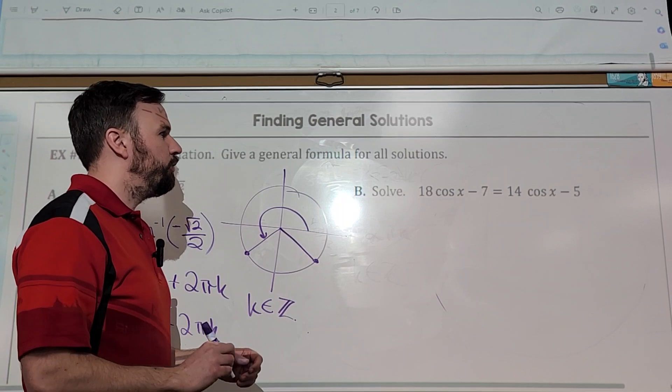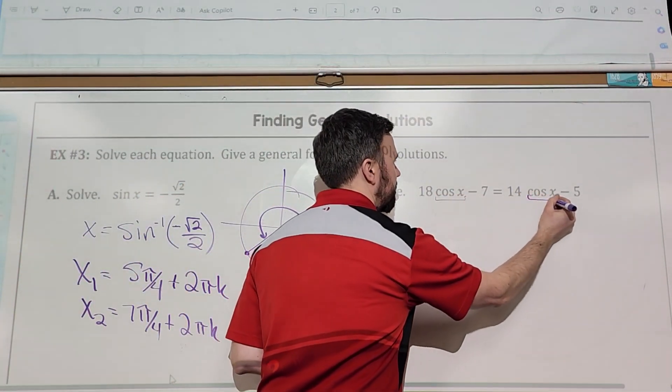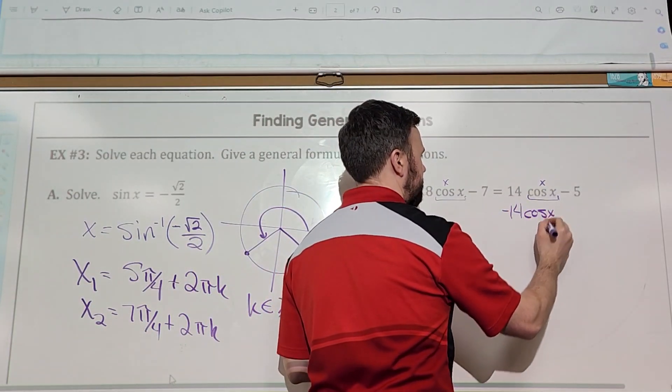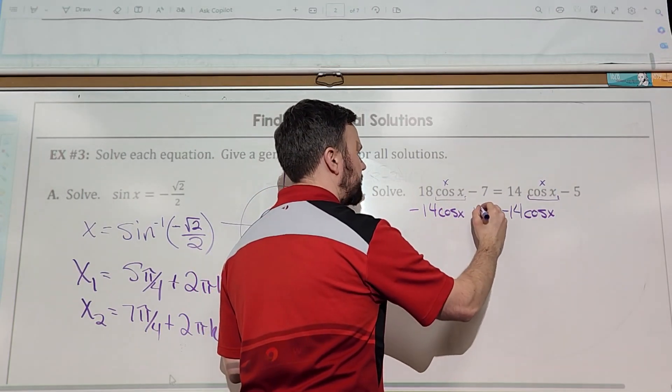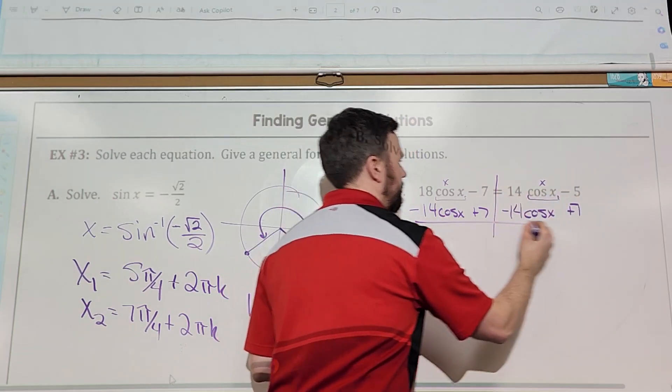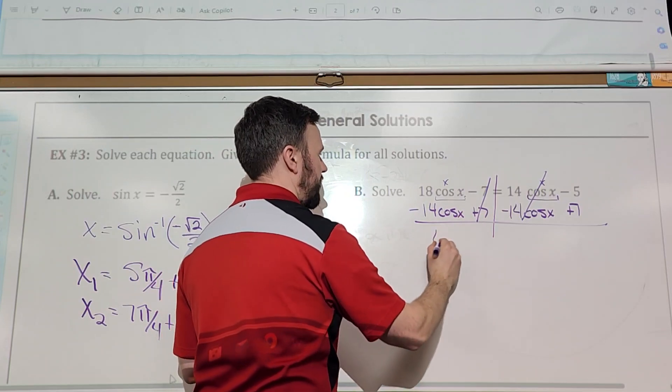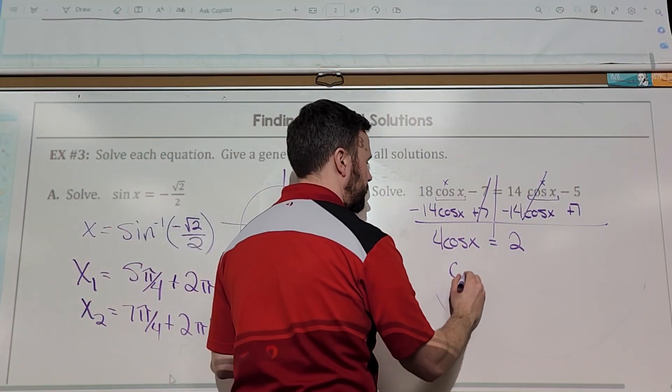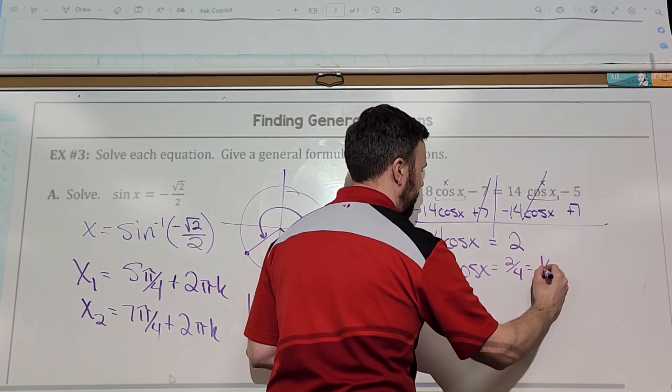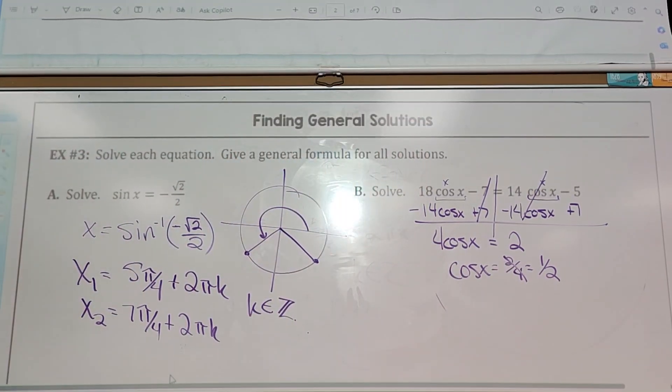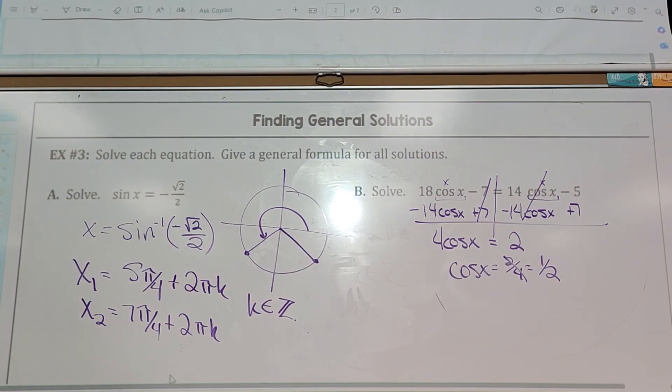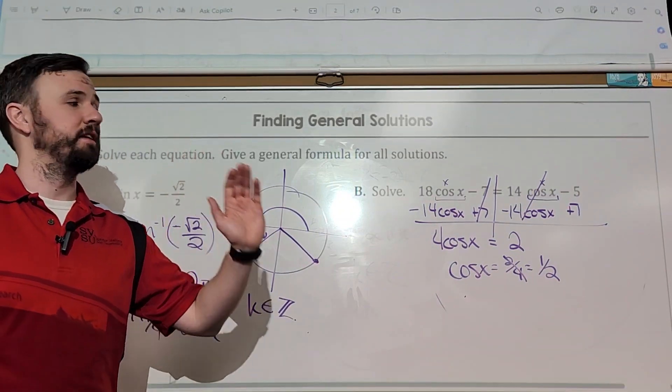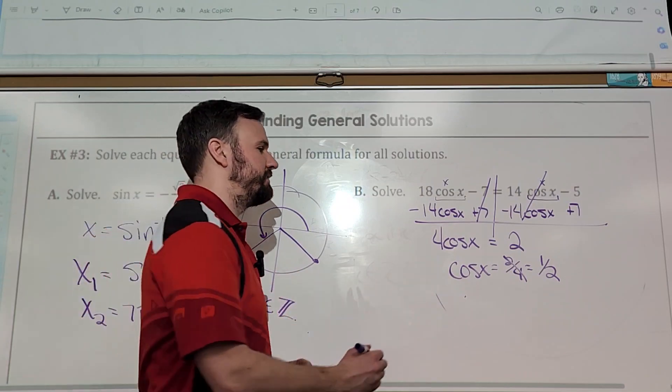Let's solve B. What am I going to treat this cosine like? Can I just treat it like an x? Yeah. So it's algebra, right? So I'm going to subtract 14 cosine of x on both sides. And I'm going to add a 7. So those cancel. Those cancel. I got 4 cosine of x equals 2. So this ends up being what? Cosine of x equals 2 over 4, which is half.